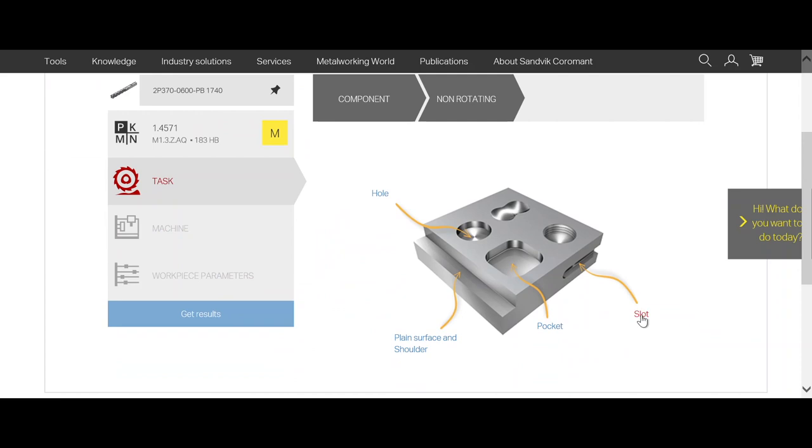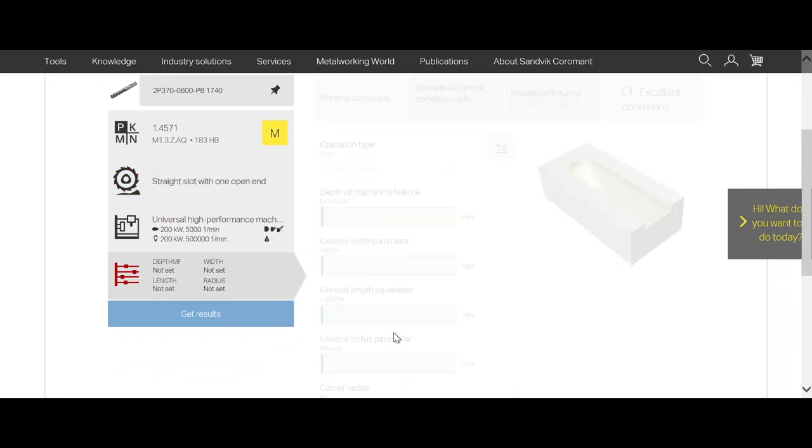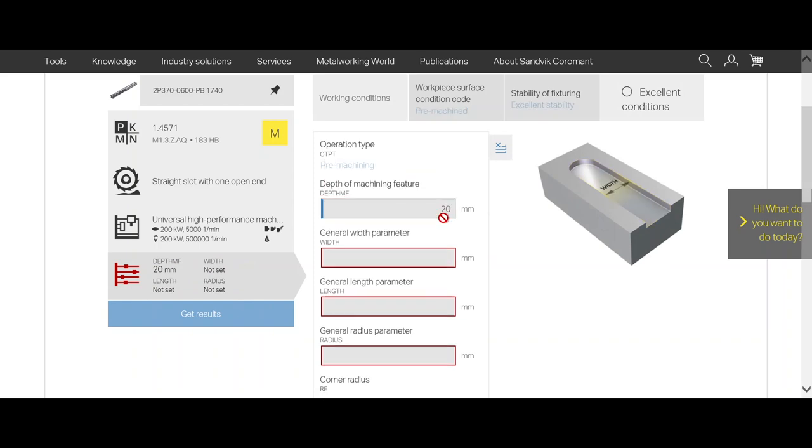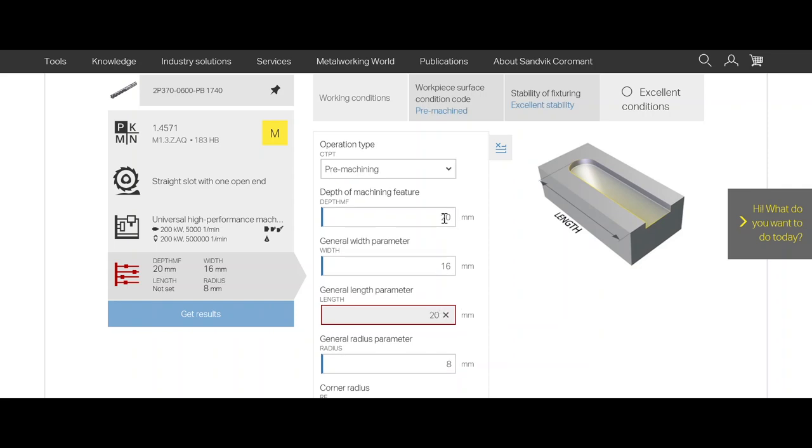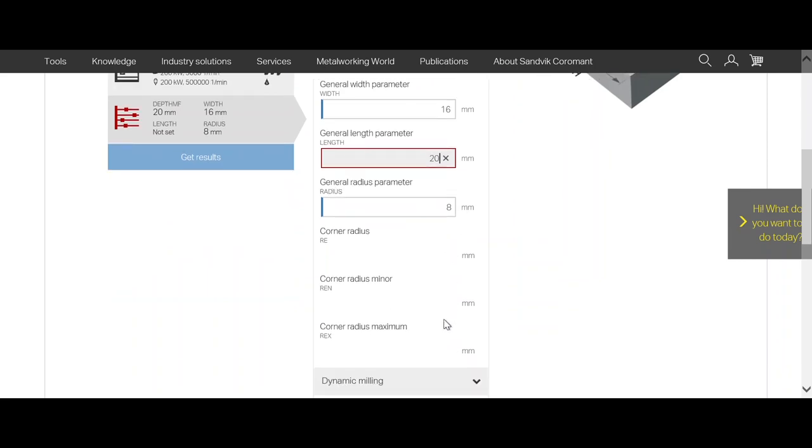We click on it and next is task. Our task is to machine a slot with one open end. Here we have it. And we have a depth of 20mm, width 16mm, length 20mm.